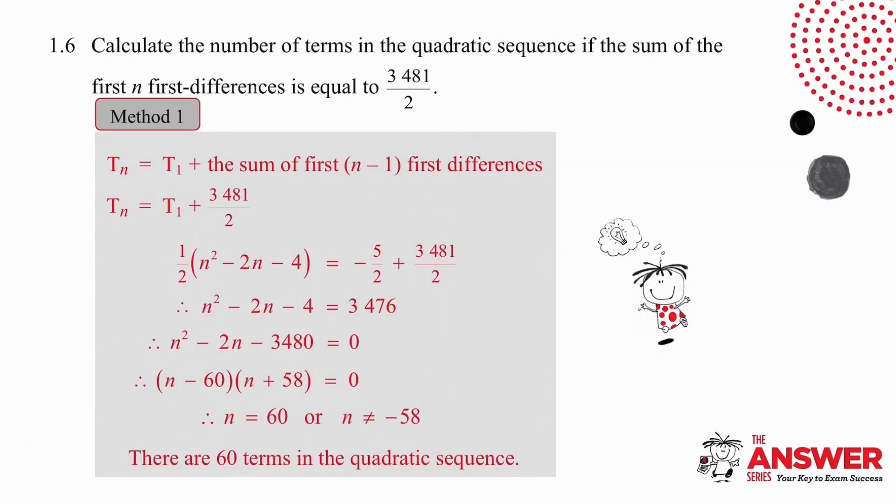The last question we are going to answer in two very different ways. We are being asked here to calculate the number of terms in the quadratic sequence if the sum of the first n first differences is equal to 3481 over 2. We're going to start by using the formula that we derived in the first slide. So if we want to work out the nth term, we can add the first term value and the sum of all the differences preceding the term that we are looking for. So to work out the position of this term, we're going to take the value of the first term and add all the differences that we've been given.